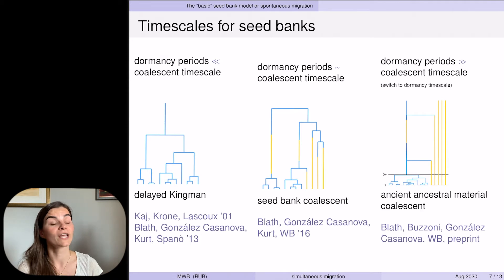If these dormancy periods are shorter, then you get something like a weak seed bank, in the sense that, for example, the genealogy is still given by a Kingman coalescent, albeit one time changed by a constant. This is the original model studied by Kashkron and Lasku, and Ablad, González Casanova, Kurt and Spano.